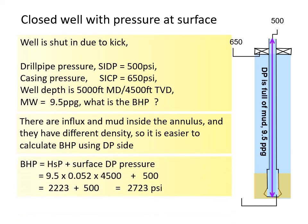Bottom hole pressure is hydrostatic pressure plus surface DP pressure. Equals 9.5 multiplied by 0.052 multiplied by 4500, and plus 500. So it is 2223 plus 500, equals 2723 psi.